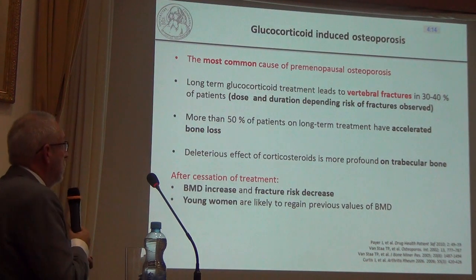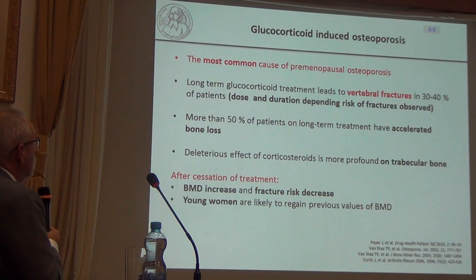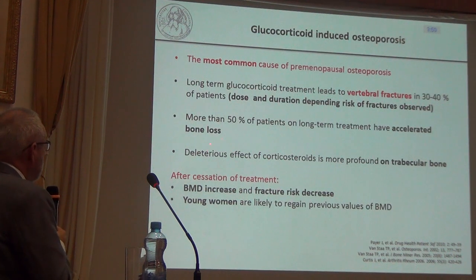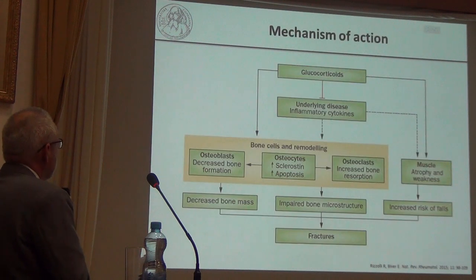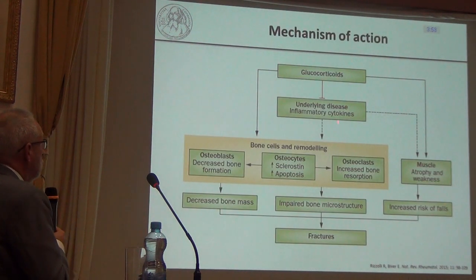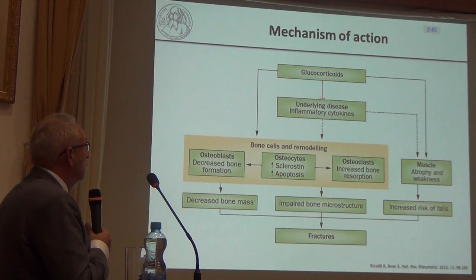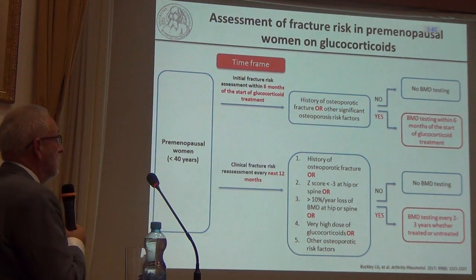Glucocorticoid-induced osteoporosis is probably the most common cause of premenopausal osteoporosis and carries a high risk of vertebral fractures due to accelerated bone loss and deterioration of trabecular bone. In premenopausal women, lower estrogen levels add to this risk. The mechanism of glucocorticoid action on bone is complex.